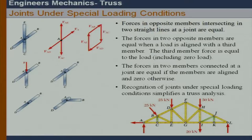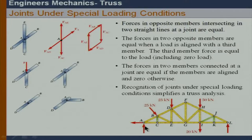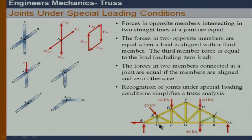With that, we can identify zero-force members in a truss. In this exercise, joint C comes under a special condition — force in BC equals zero. Similarly, at joint K, force KJ equals zero. As soon as KJ equals zero, joint J again satisfies the special condition, and force JI equals zero by taking perpendicular equilibrium with respect to that member.